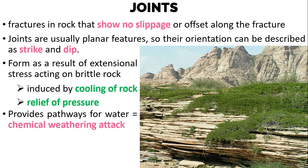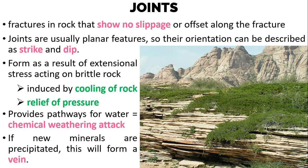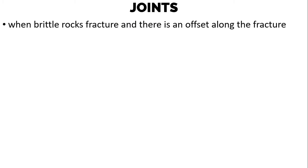Joints provide pathways for water and thus pathways for chemical weathering attack. Because joints provide access of water to rock, rates of weathering and/or erosion are usually higher along joints, and this can lead to differential erosion. If new minerals are precipitated from water flowing in the joints, this will form a vein. Many veins observed in rock are mostly quartz or calcite.